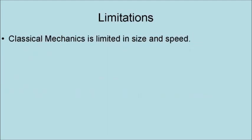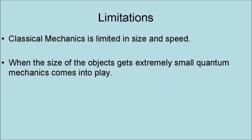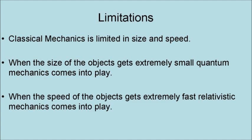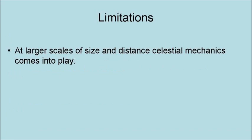Classical mechanics is limited in terms of size and speed. When the size of the object gets extremely small, quantum mechanics comes into play. When the speed of the object gets extremely fast, relativistic mechanics comes into play. At large scales of size and distance, celestial mechanics comes into play.